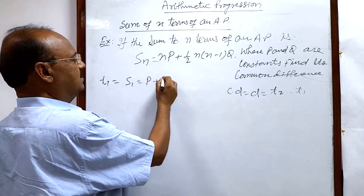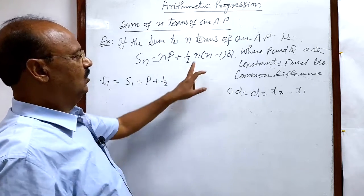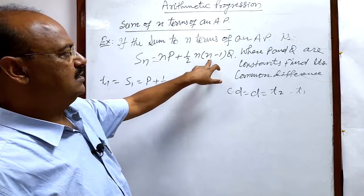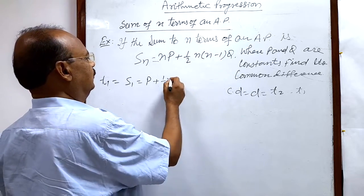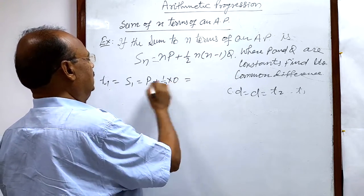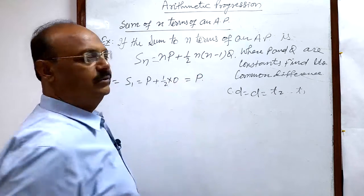that is p plus half into 1 into (1 minus 1). 1 minus 1 is 0, so therefore s1 is equal to p.